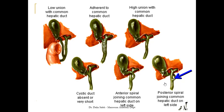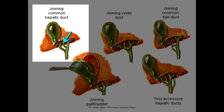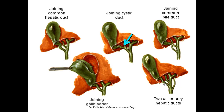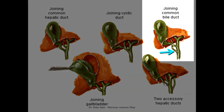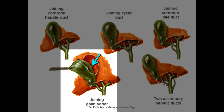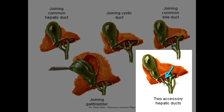All of these anomalies should be taken into consideration during cholecystectomy or surgical removal of the gallbladder. There are also a group of anomalies related to the presence of accessory hepatic ducts. Here, we can see an accessory hepatic duct joining the common hepatic duct. In this picture, the accessory hepatic duct joins the cystic duct. Here, the accessory hepatic duct joins the common bile duct. Sometimes it joins the gallbladder itself. Here, we have two accessory hepatic ducts.